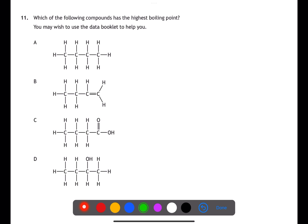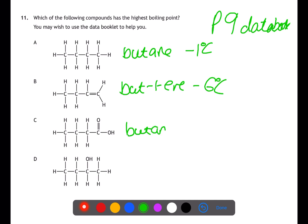For this question, use page nine of your data book. A is butane with a boiling point of negative 1 degrees Celsius. B is but-1-ene with a boiling point of negative 6 degrees Celsius. C is butanoic acid with a boiling point of 164. And D is butan-2-ol which has a boiling point of 100 degrees. Therefore, butanoic acid has the highest boiling point.